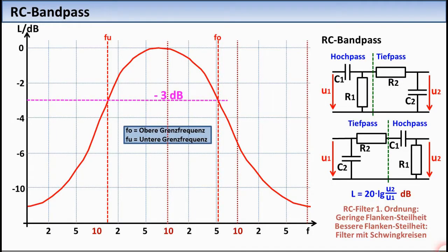By connecting a high-pass and a low-pass in series, a band-pass can be constructed. Care must be taken here that the cutoff frequency of the low-pass, which is designated FO here, is higher than the cutoff frequency of the high-pass, which is designated FU here. It does not matter whether the high-pass comes first and then the low-pass, or vice versa.